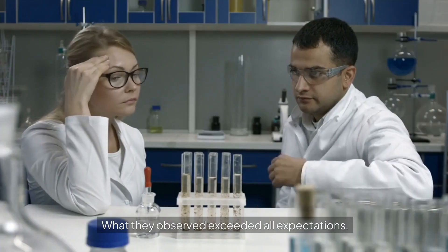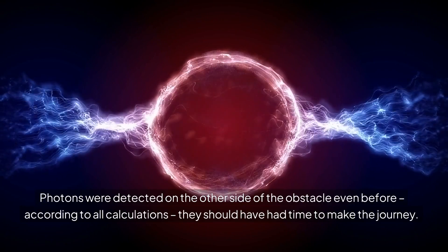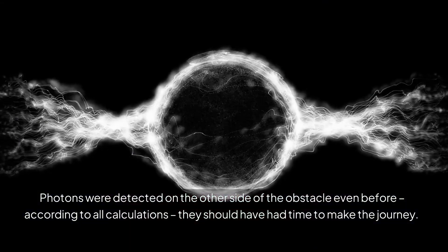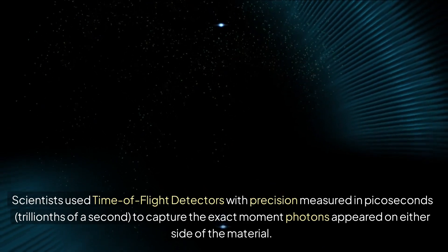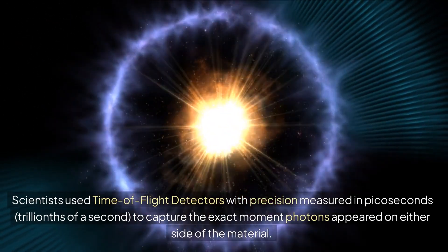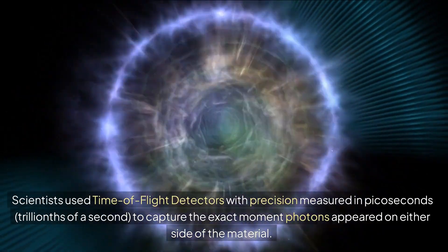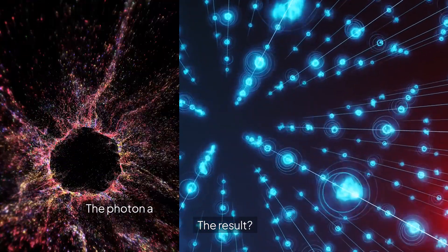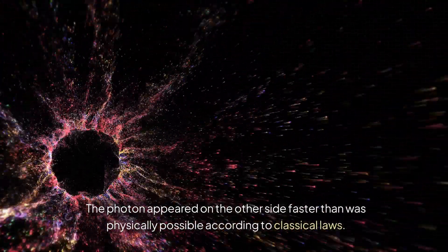What they observed exceeded all expectations. Photons were detected on the other side of the obstacle even before, according to all calculations, they should have had time to make the journey. Scientists used time-of-flight detectors with precision measured in picoseconds, trillions of a second, to capture the exact moment photons appeared on either side of the material. The result? The photon appeared on the other side faster than was physically possible according to classical laws.